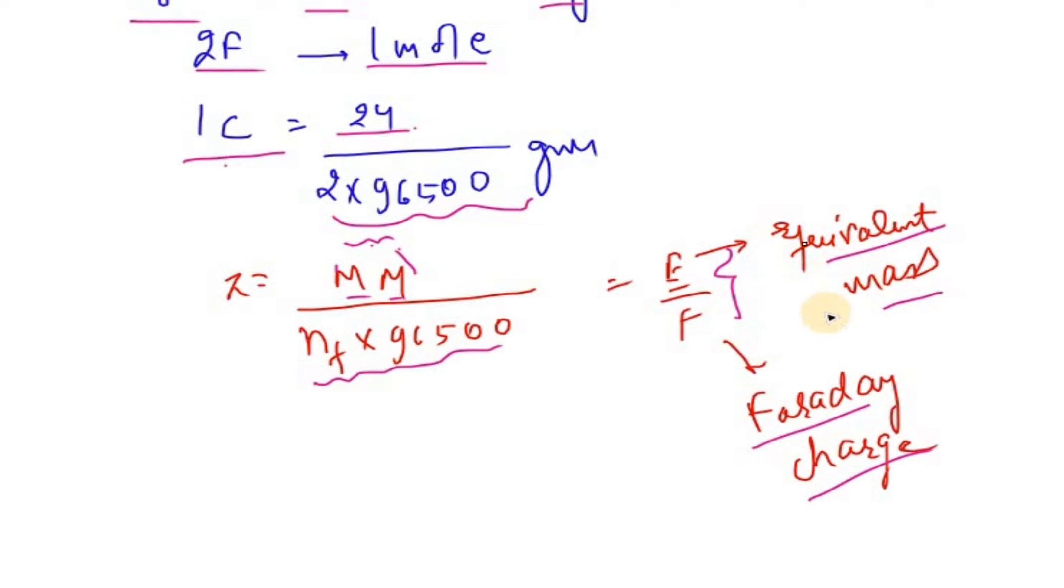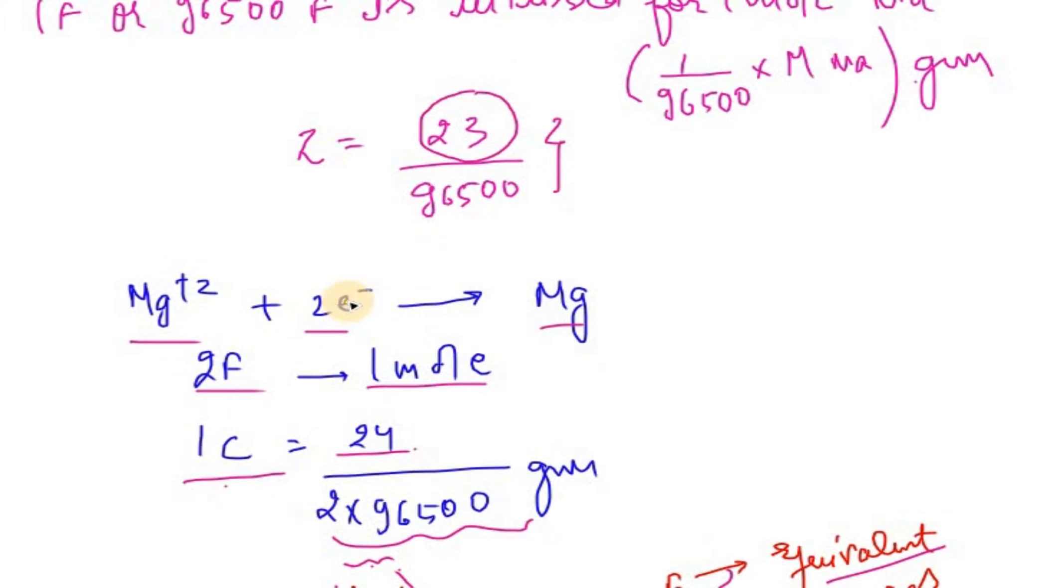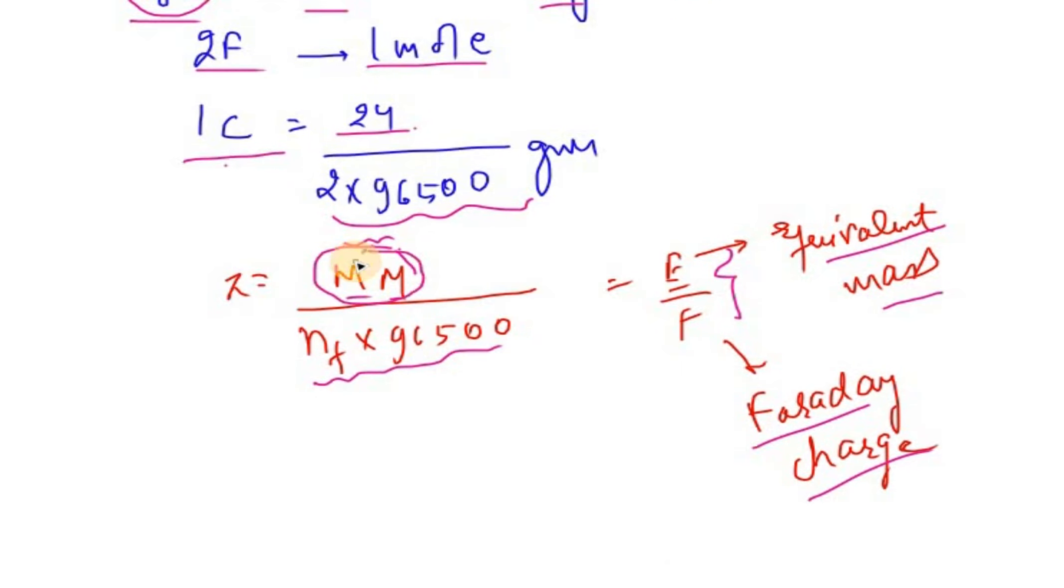Z is the electrochemical equivalence. M is the mass of substance oxidized or reduced at electrode. I is the current in amperes, T is the time, and Z is the mass of substance oxidized or reduced when one coulomb of charge is utilized in the process.